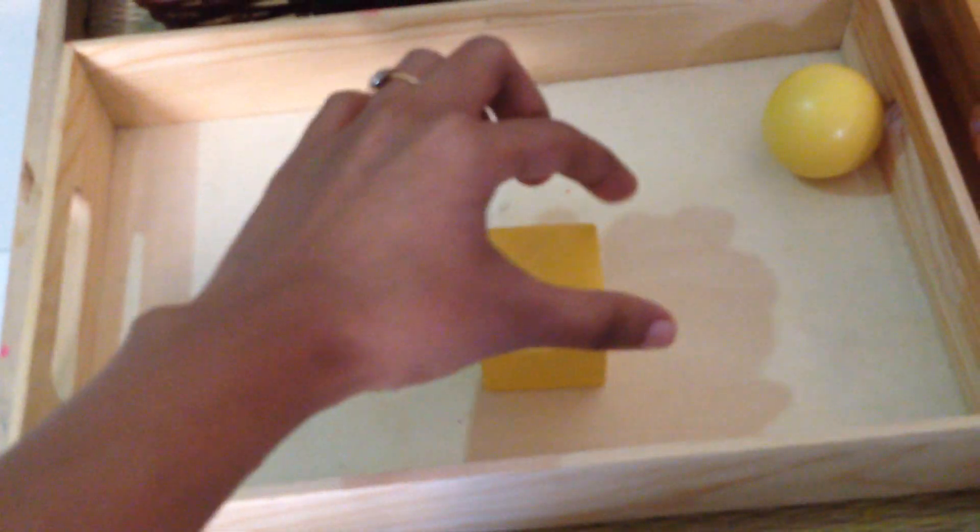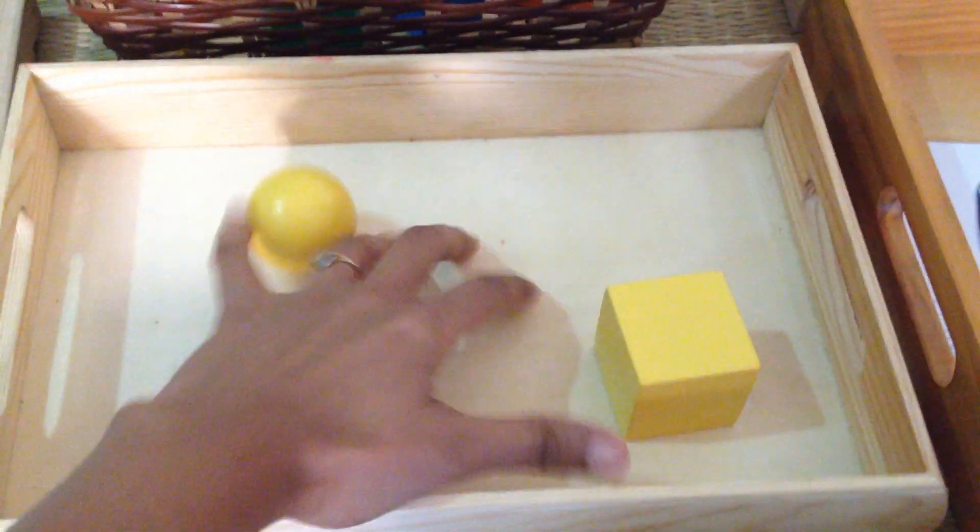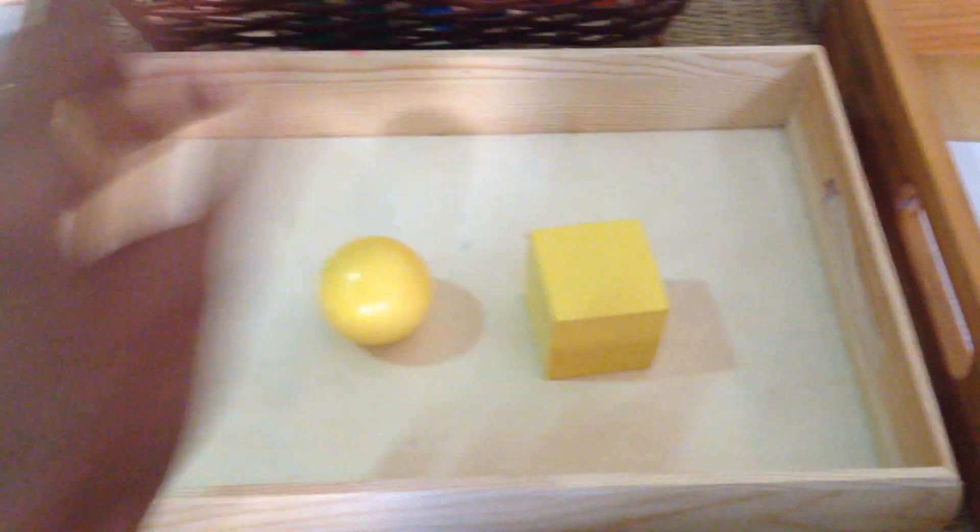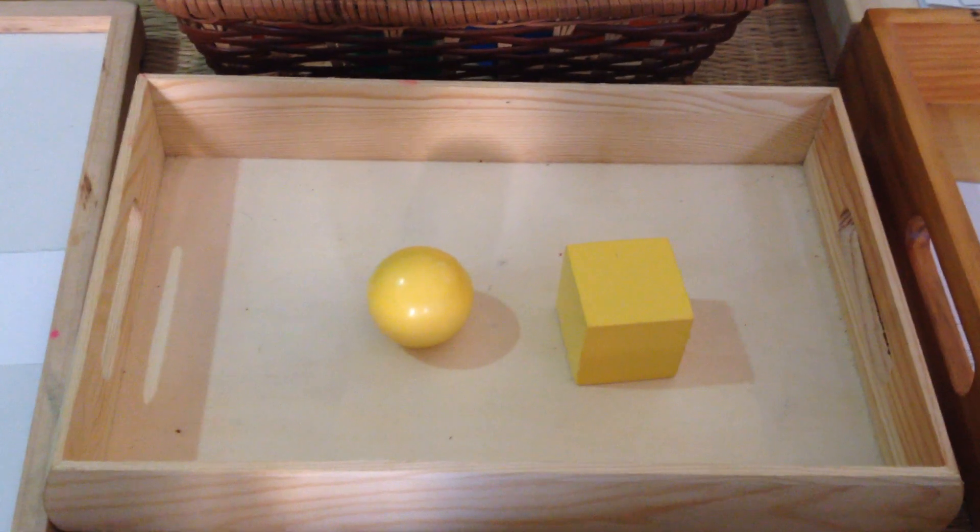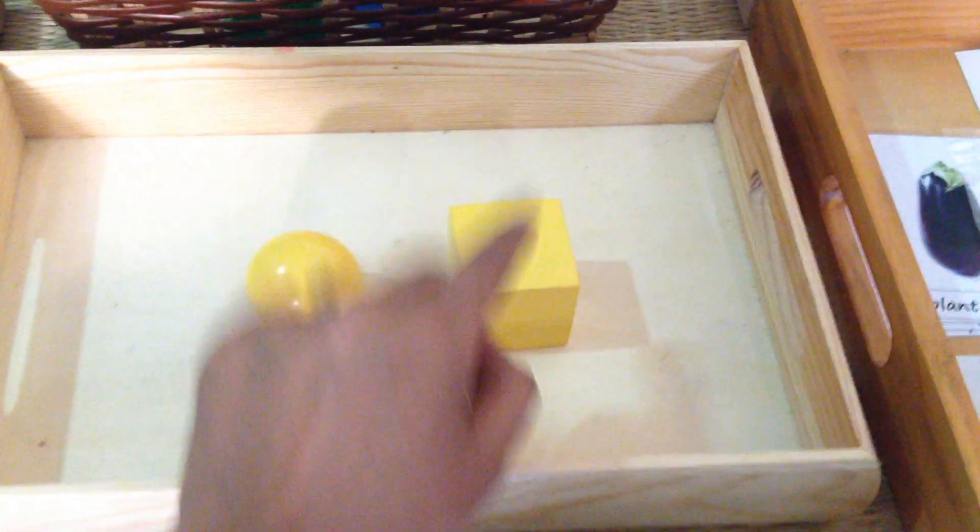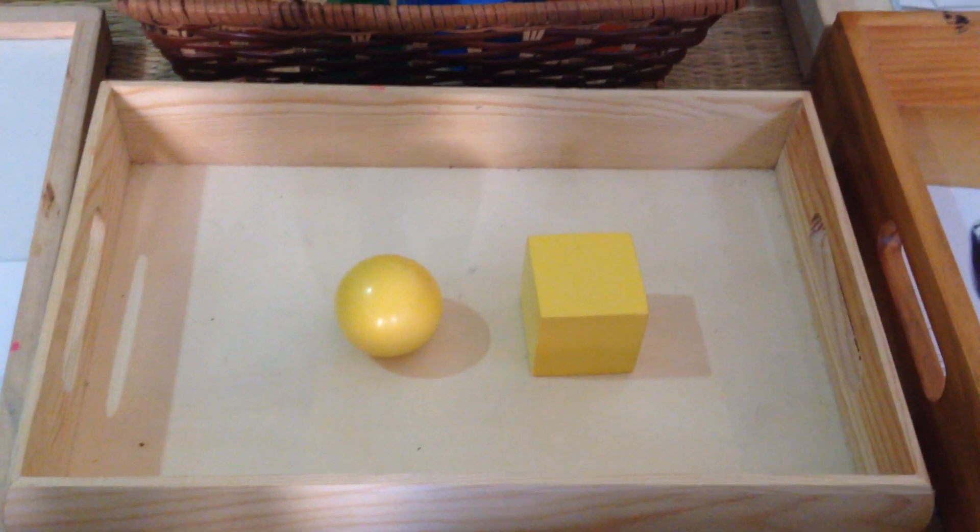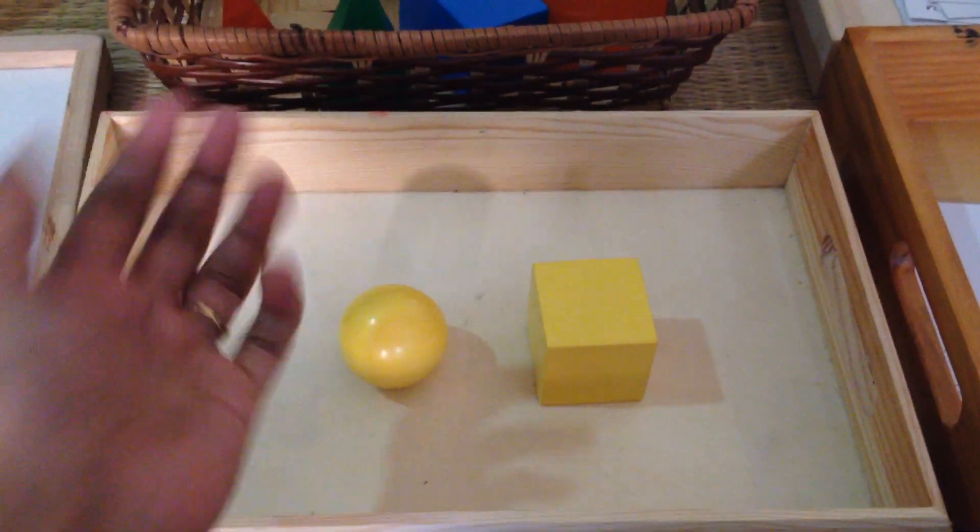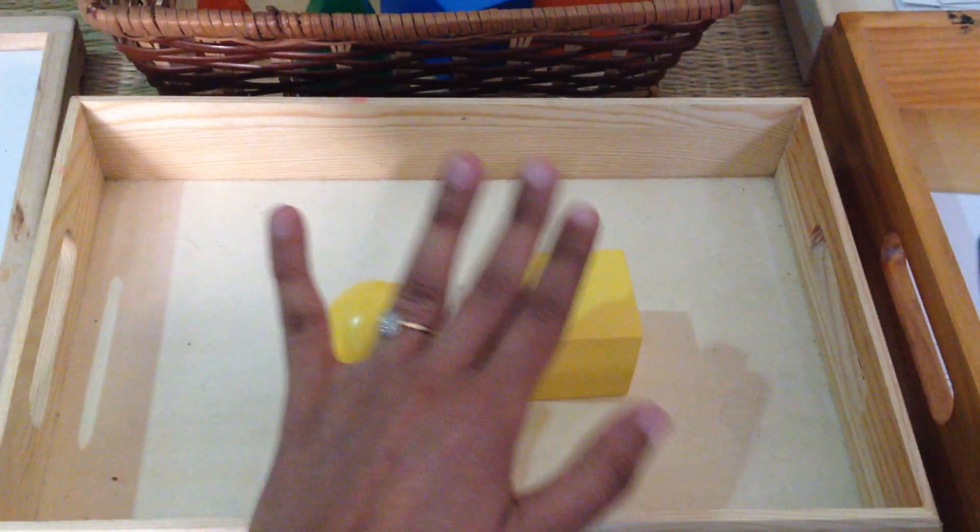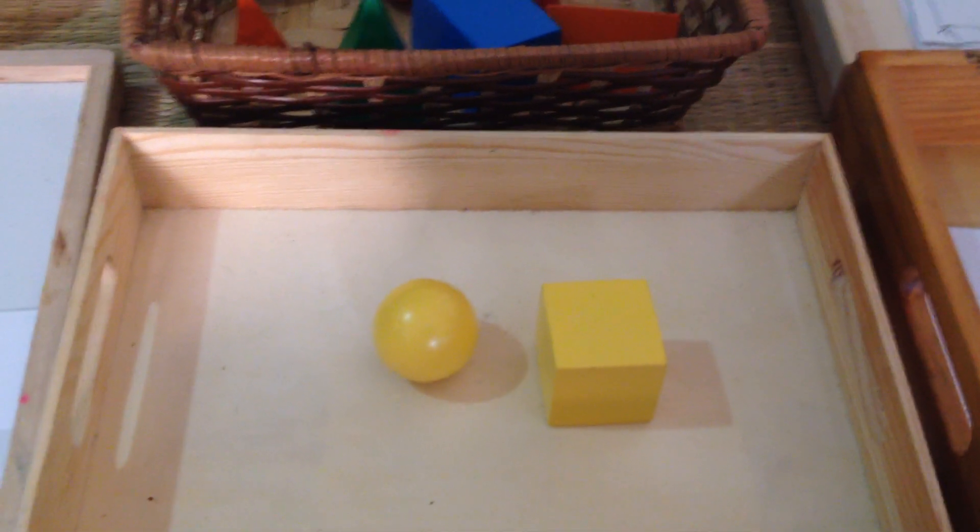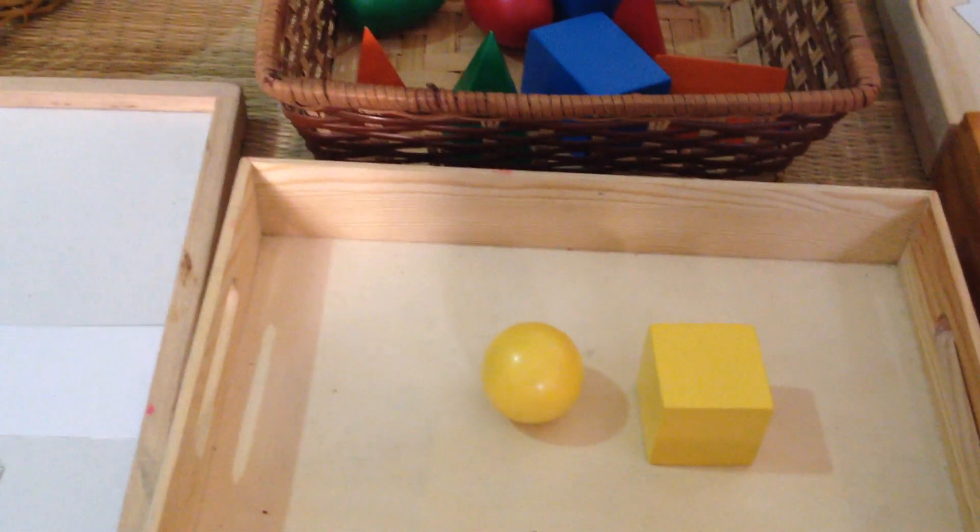Then you can do a quick three-period lesson. So this is a sphere. First period. Second period, can you give me the sphere in my hand? We can make it even more fun. Can you keep the sphere on your head? Can you go ahead and put this cube on the table? You can make it super fun. You can include elements of movement in this period.